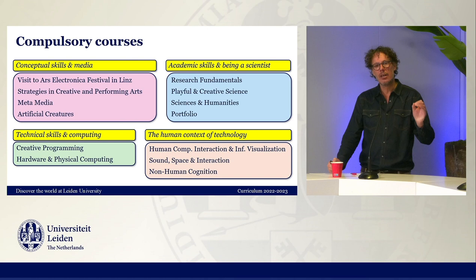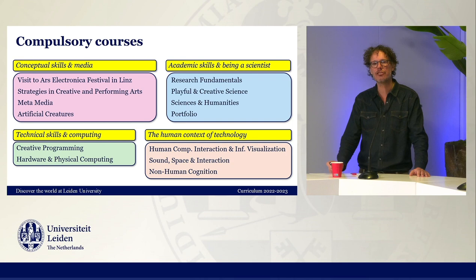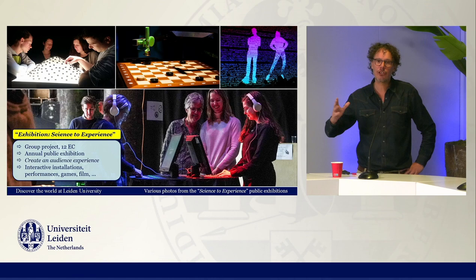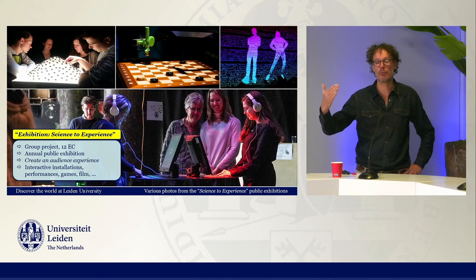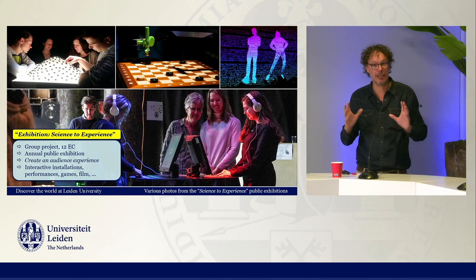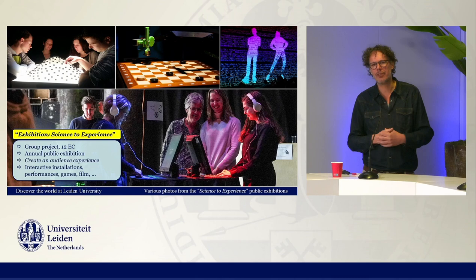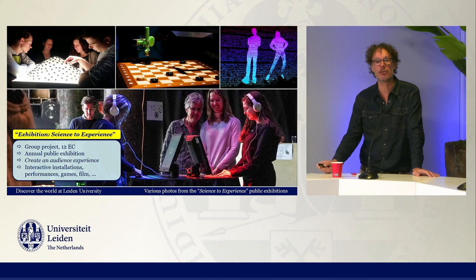Doing all these courses in the first year is in itself very interesting, but there's one more thing: a particular large course worth 12 ECs called the Science to Experience Exhibition. It's where the program organizes a public exhibition in which our first-year students exhibit works that offer an experience to a general public to tell an academic story. Students look for something that fascinates them in academic research and translate that into an interactive installation, a performance, a more narrative or theatrical work — anything they want to show in this public exhibition visited by many people.